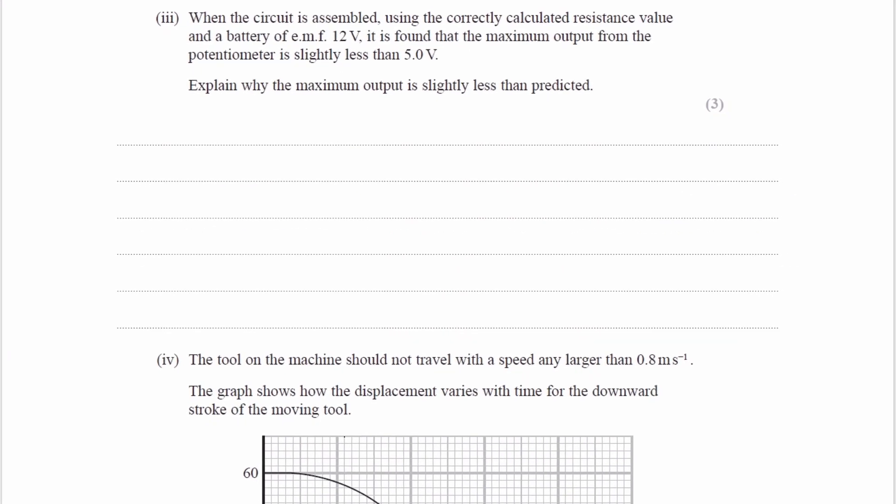For this part, we're told that when the circuit is assembled using the correctly calculated resistance value and a battery of EMF 12 volts, the output voltage is a bit less than 5 volts. Why is this the case? That will be because there is internal resistance. If there is internal resistance, voltage will be dropped across the internal resistance. Therefore we have less available for the external components, so the terminal PD will decrease.